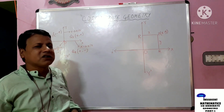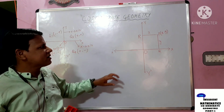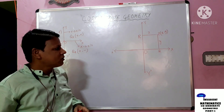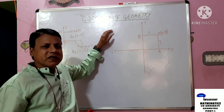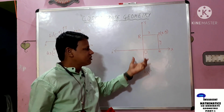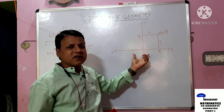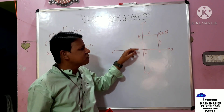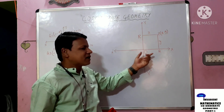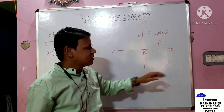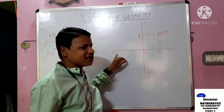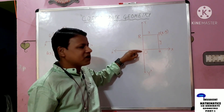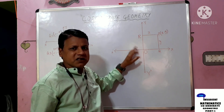Before going to discuss the distance formula, I would like to explain some fundamental concepts of coordinate geometry. In coordinate geometry, as we read in standard nine, there are two lines — one is a horizontal line and another is a vertical line — which are perpendicular to each other. Those two lines are called the two axes. The horizontal line is called the x-axis, the vertical line is called the y-axis, and their meeting point O is called the origin.